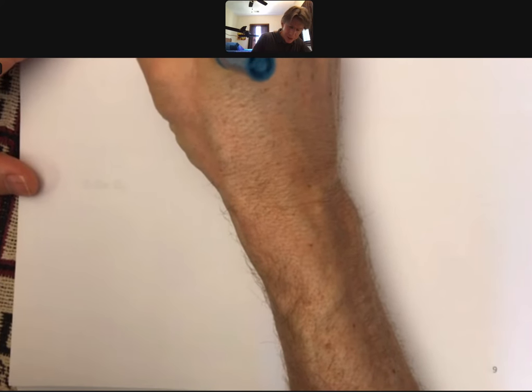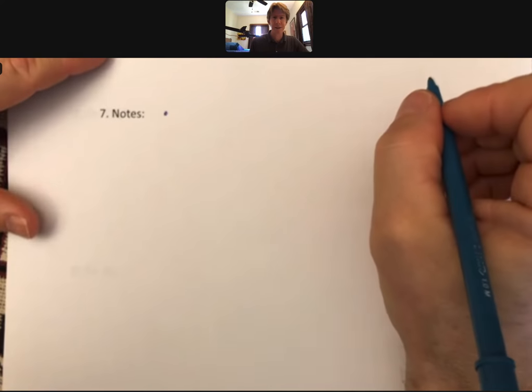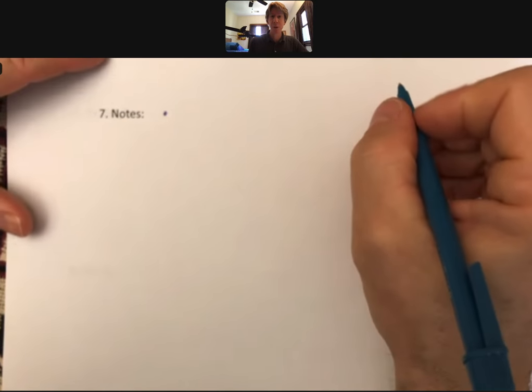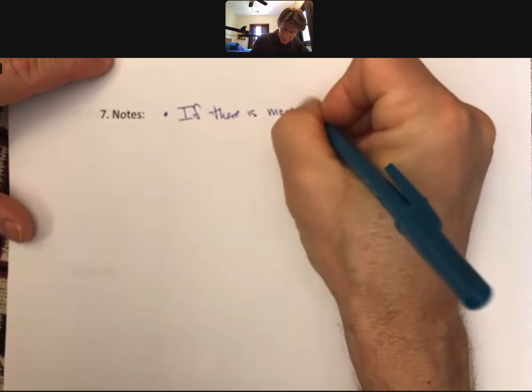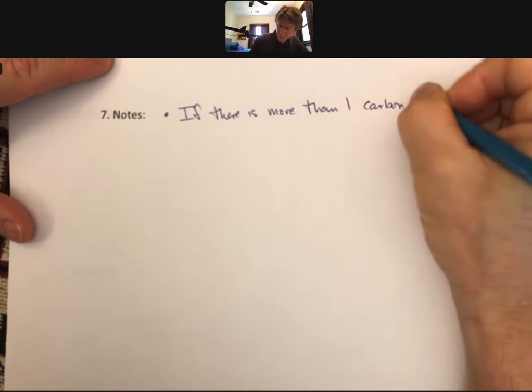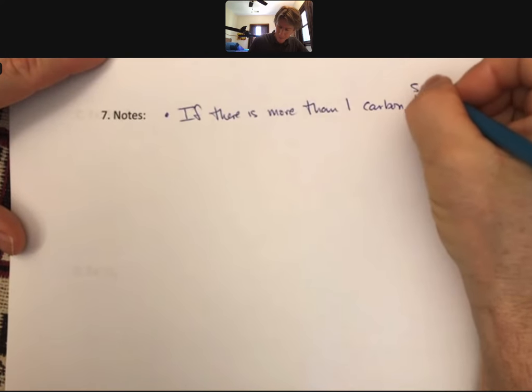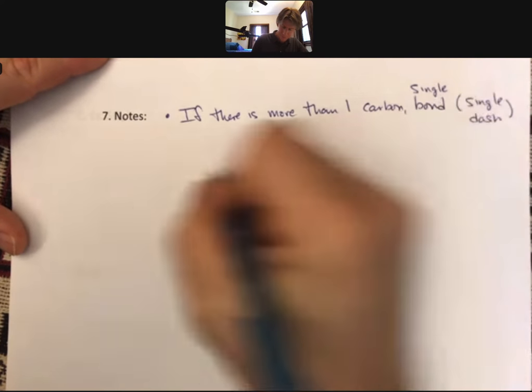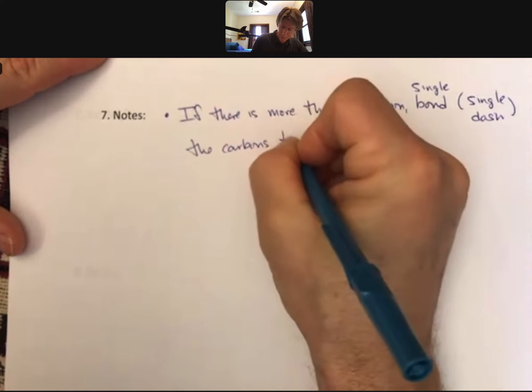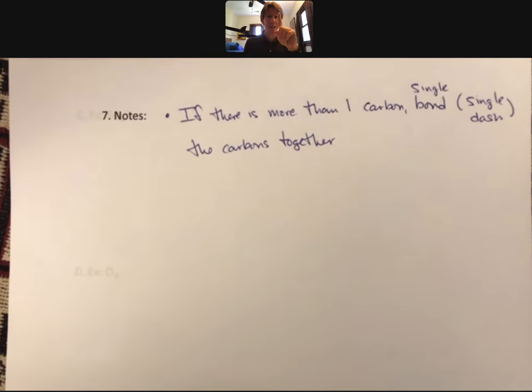Now let's talk about some notes. And I have some notes to tell you the notes. So first off, notes. Let's go back to blue. So first note is, so if there's more than one carbon, bond the carbons together, or single bond, which is a single dash that carbons together.